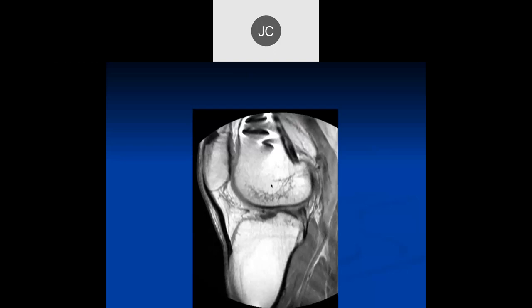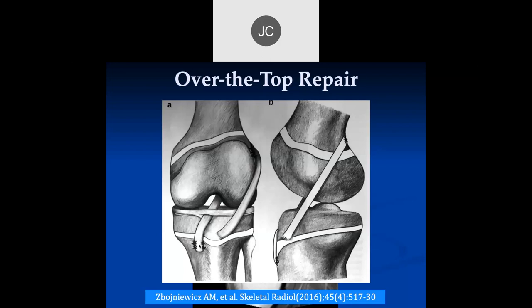I don't see a femoral tunnel, but there's some attachment there. Maybe the graft is attaching to the posterior. This is another fascial-sparing type surgery, which is called an over-the-top surgery, where obviously this patient at this stage in their life has closed growth plates. But what happens is you can have a tibial tunnel.